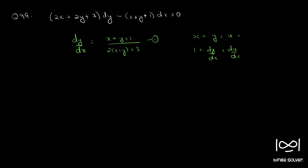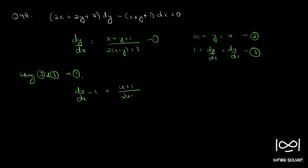Calling the original equation 1, the substitution x plus y = u as 2, and 1 plus dy/dx = du/dx as 3, and using equations 2 and 3 in 1, we get du/dx minus 1 equal to u plus 1 by 2u plus 3. So du/dx equals u plus 1 by 2u plus 3 plus 1, which is u plus 1 plus 2u plus 3, all over 2u plus 3.